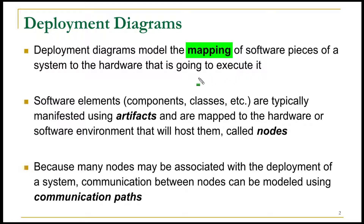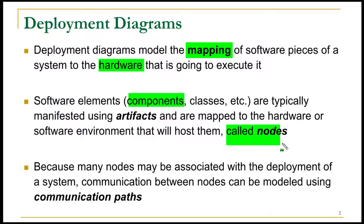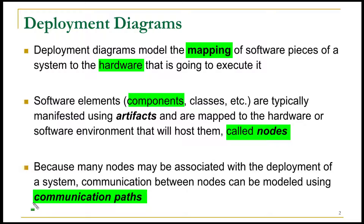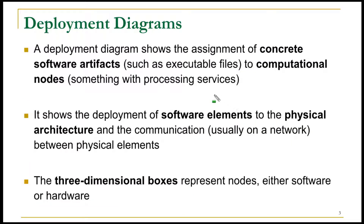Deployment diagrams are used to model the mapping of your software system to the hardware. You will be exactly telling where and which piece of software will be deployed on what type of hardware. The elements of the software, which are usually the components — components can be considered as a group or combination of multiple classes — are ultimately hosted onto some hardware or hardware-plus-software environment which we call nodes. These nodes ultimately have to communicate with each other, and to represent that communication we use communication paths.